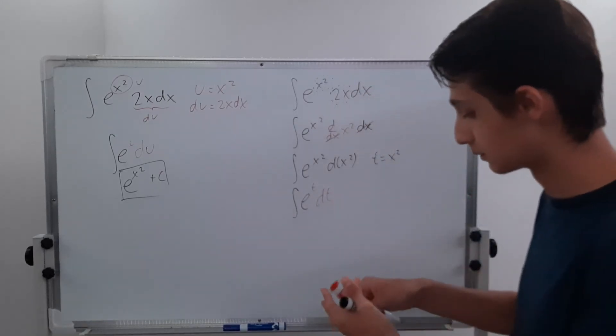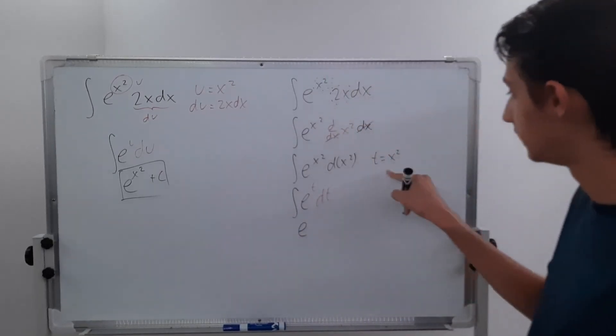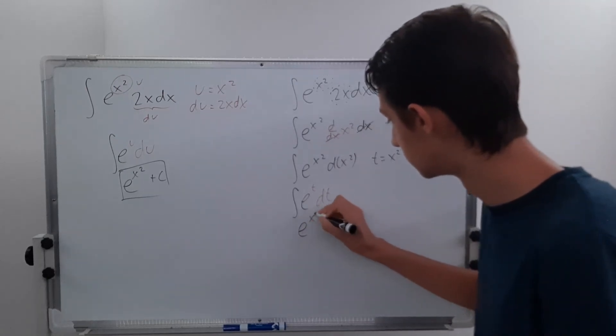And that's a lot better. So then we can just do e to the t, which is x squared, plus c.